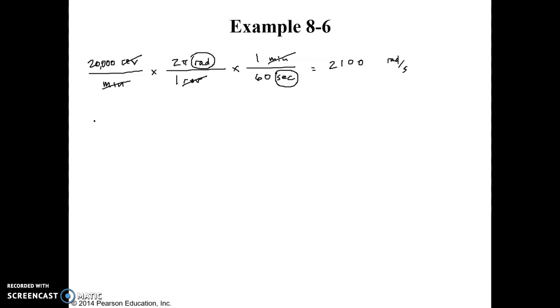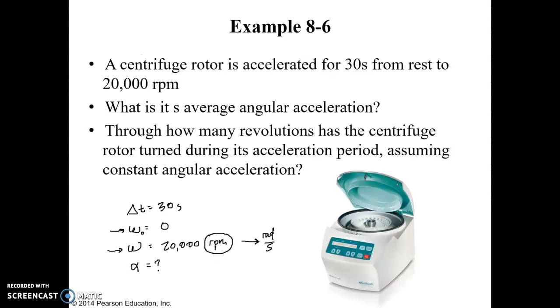Let's now look at our definition of angular acceleration. Angular acceleration is Δω over Δt, or ω₂ minus ω₁ over Δt. So our ω₂, our final velocity, is our 2100 radians per second minus the initial angular velocity was 0, divided by time was 30 seconds. I should take a moment here to say that although this value, when you calculate it, is 2094, this is rounding it off to two significant figures.